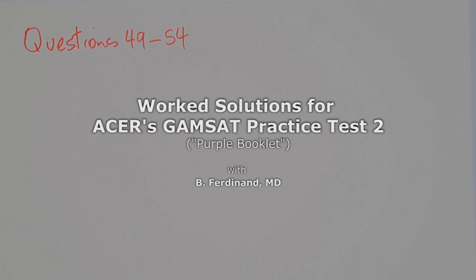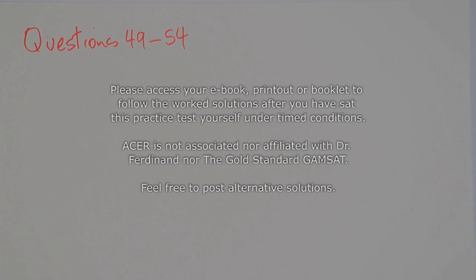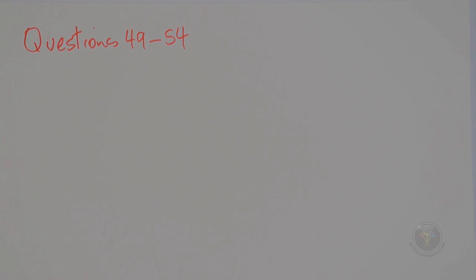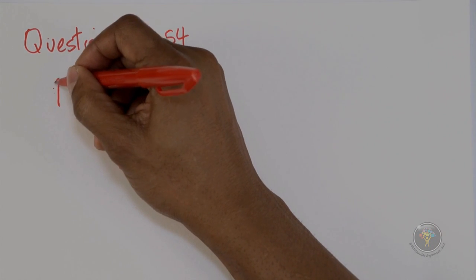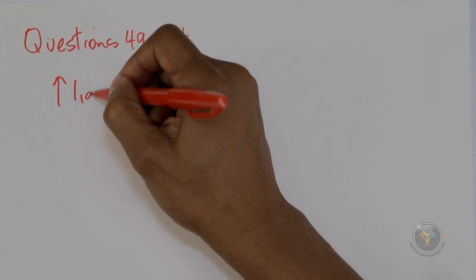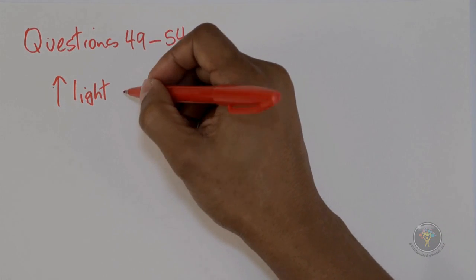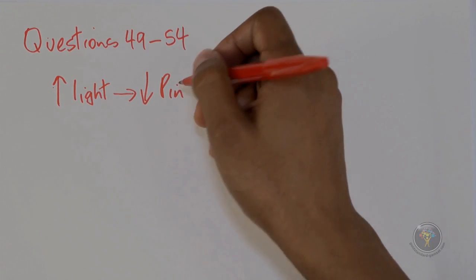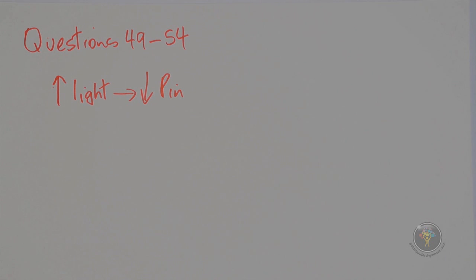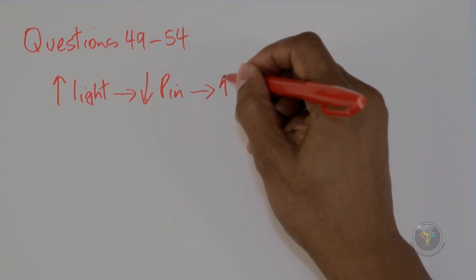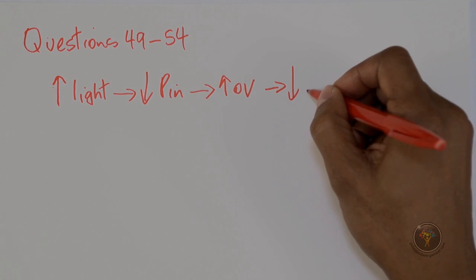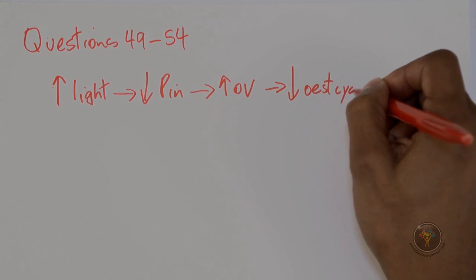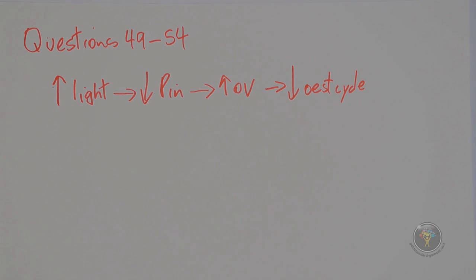Questions 49 to 54 are about the pineal gland and continuous light exposure. To summarize what's going on: increased light leads to decreased pineal gland activity. At the same time, the weight of the ovaries increases, and the length of the estrus cycle shortens. The estrus cycle is a hormone-controlled cycle that affects female reproduction in mammals.